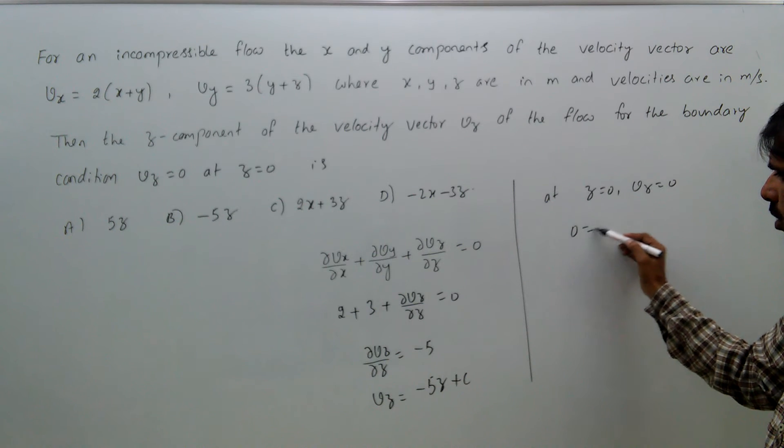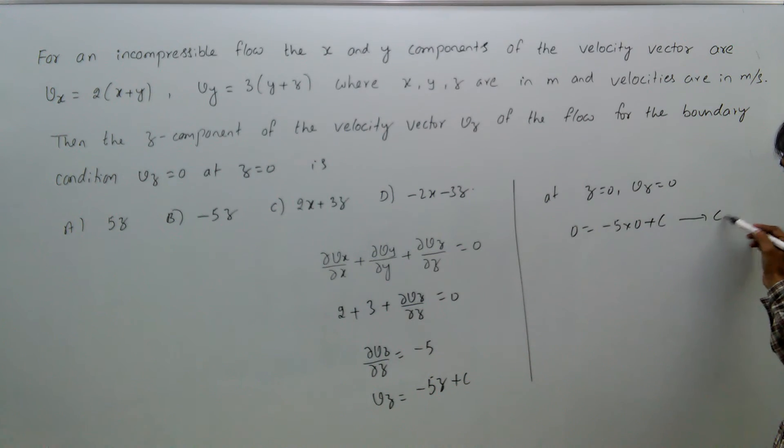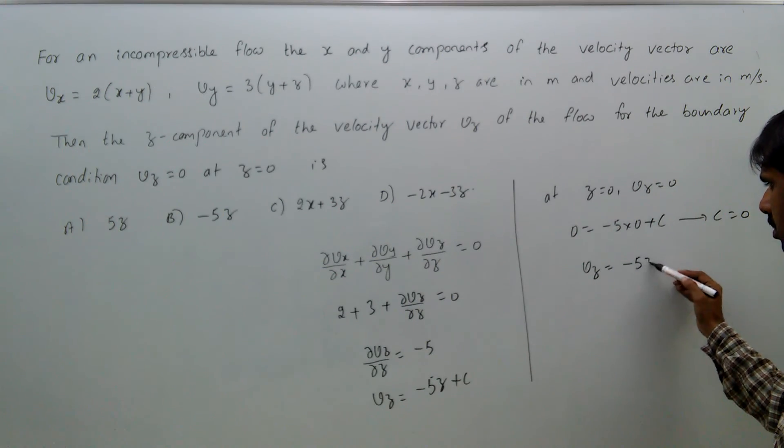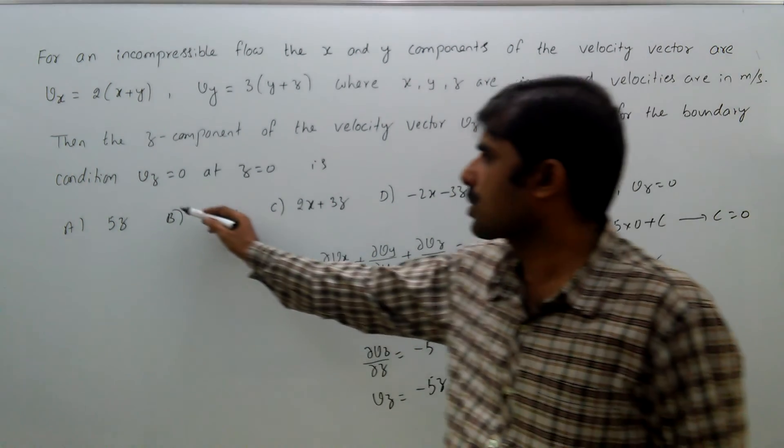Therefore, 0 = -5(0) + c, from this c = 0. Therefore, vz = -5z. So option b is the right answer.